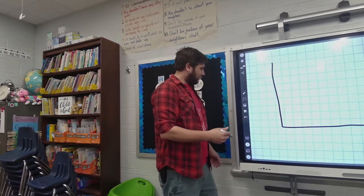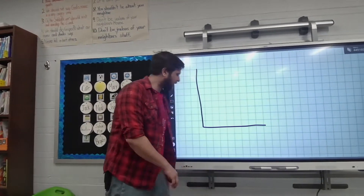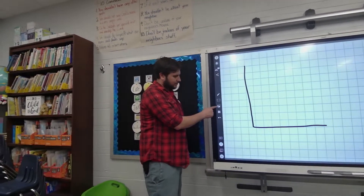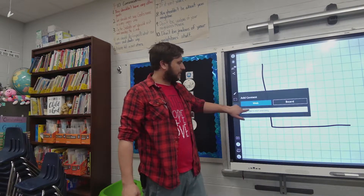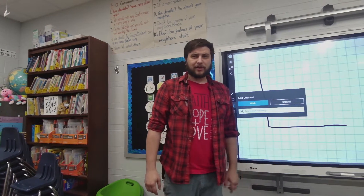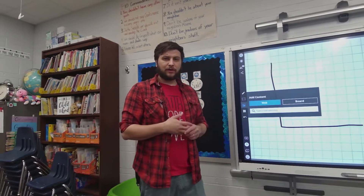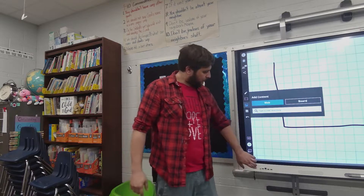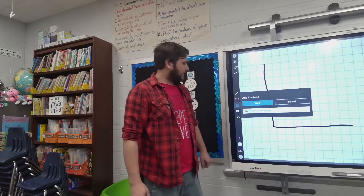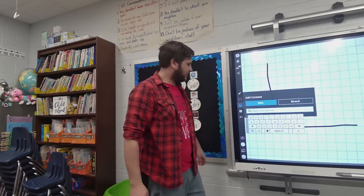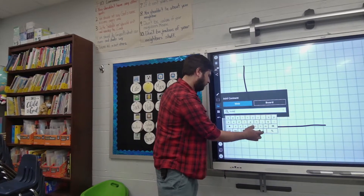Next, let's say I want to add in a piece of media. I'm going to select this middle button here that looks like a picture, and here I can add content either from the web or something that's been loaded onto the board. If you had some photos or a video on a flash drive, you could plug it into the board and access it from there. In this case let's add web and I'm going to do a search for husky.